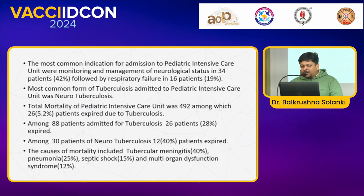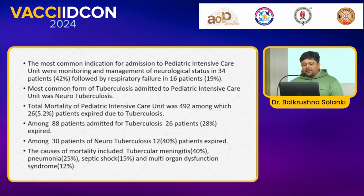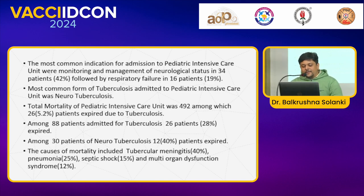The most common indication for admission in PICU was monitoring and management of neurological status in 34 patients, followed by respiratory failure. The most common form of tuberculosis admitted to the pediatric intensive care unit was neurotuberculosis. Total mortality in the pediatric ICU was 492, among which 26 patients — 5.2% — expired due to tuberculosis. Among 80 patients admitted for TB, 26 patients, which is 28%, expired. Among 30 patients of neurotuberculosis, 12 patients — 40% — expired. Causes of mortality included tubercular meningitis most commonly at 40%, followed by pneumonia 25%, septic shock 15%, and multi-organ dysfunction syndrome 12%.